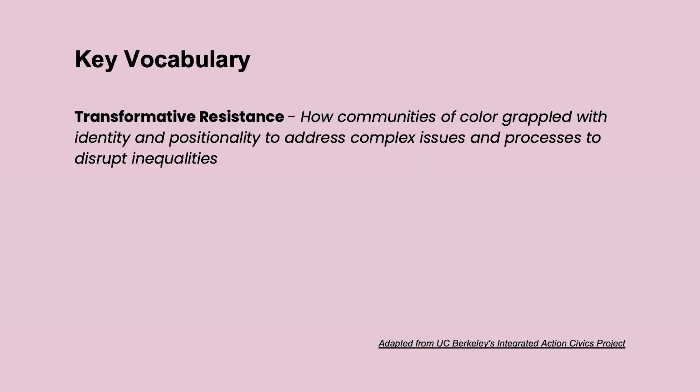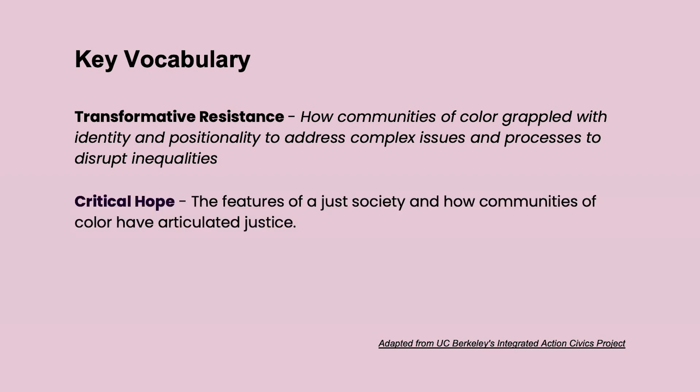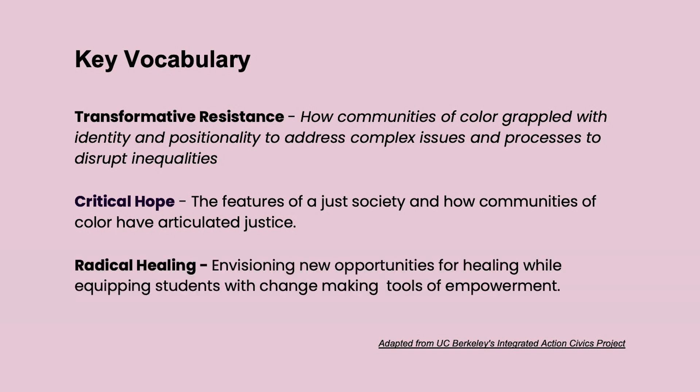So review the three terms for us again, because they're powerful. When we talk about transformative resistance, we're really thinking about how communities of color have grappled with identity and positionality to address complex issues and processes to disrupt inequalities. When we think about critical hope, we're looking at the features of a just society and how communities of color have articulated what that justice looks like. And when we look at radical healing, we're envisioning new opportunities for healing while equipping students with change-making tools of empowerment.